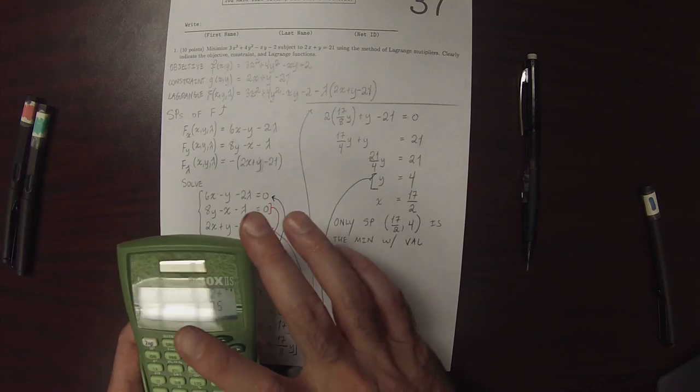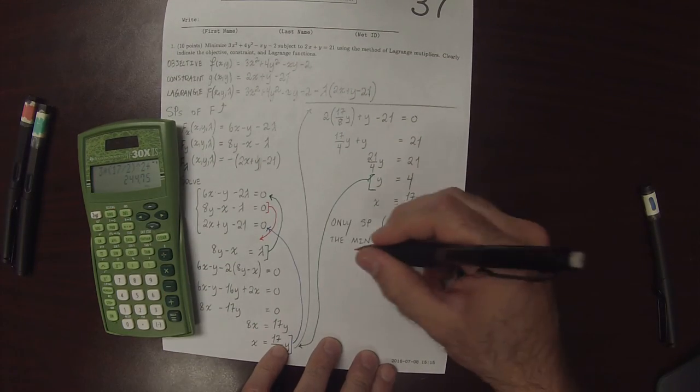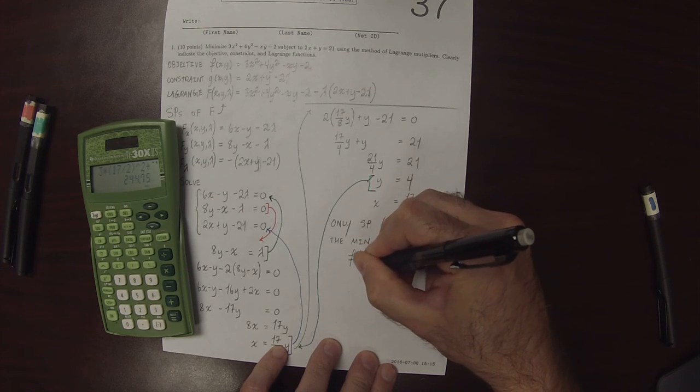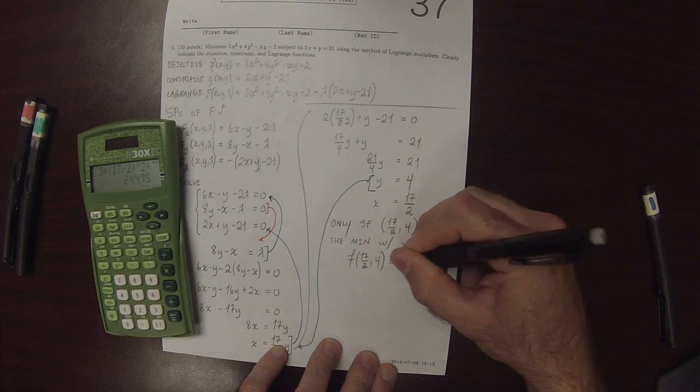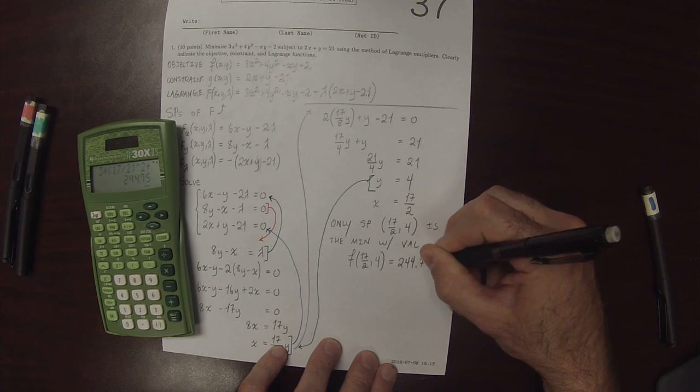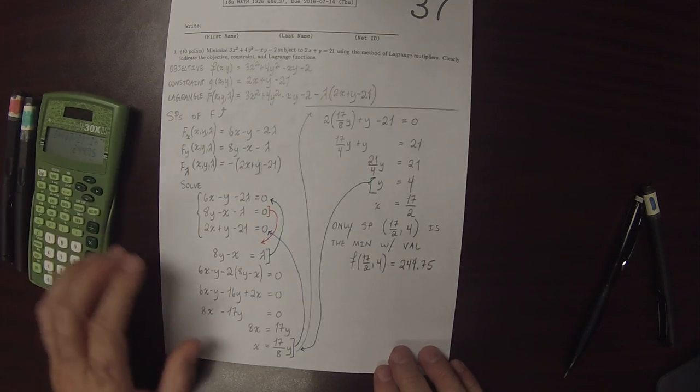So plugging that in, hopefully I plugged it in correctly, the minimum value f evaluated at 17 over 2 comma 4 is 244.75. And that's the answer to the exercise.